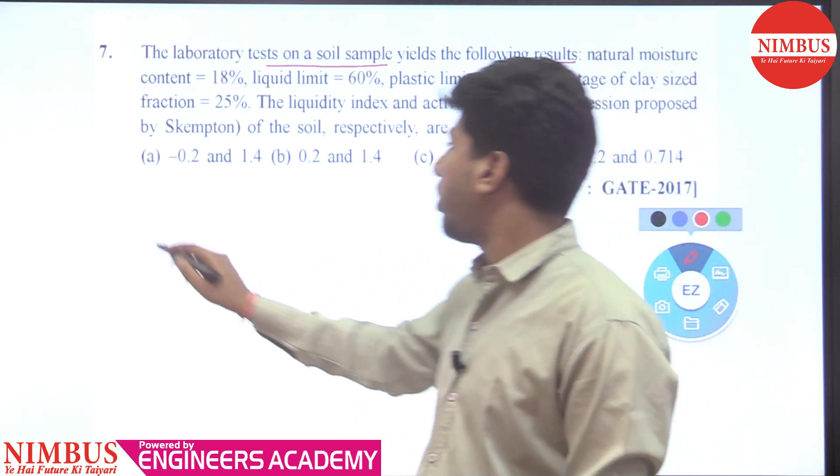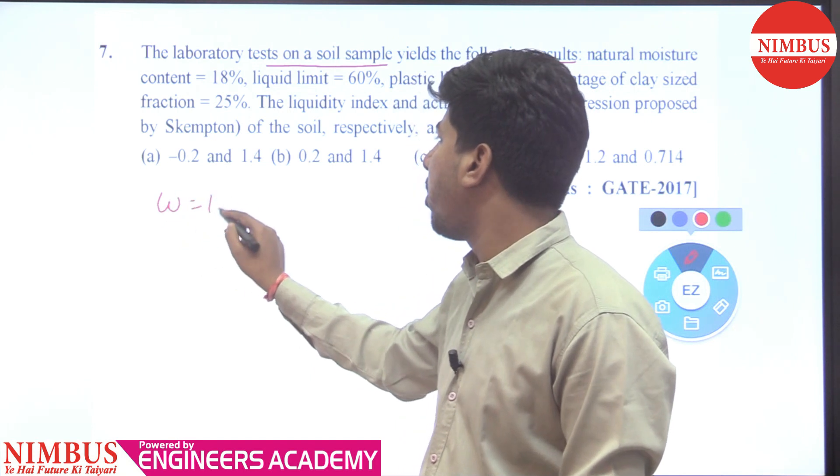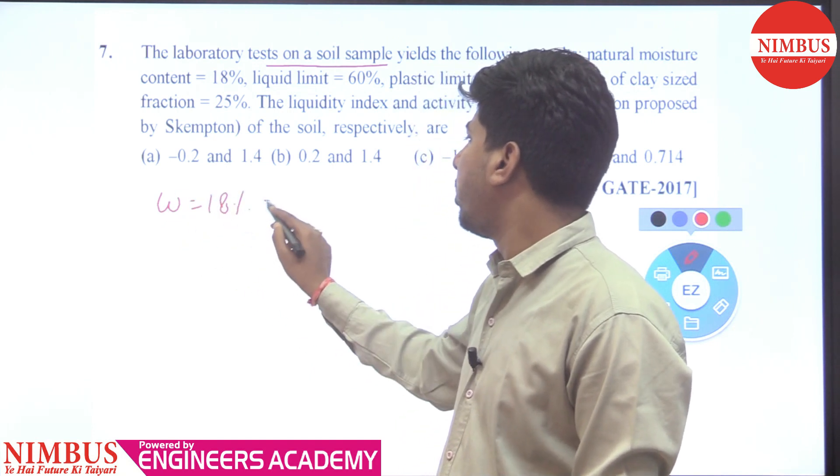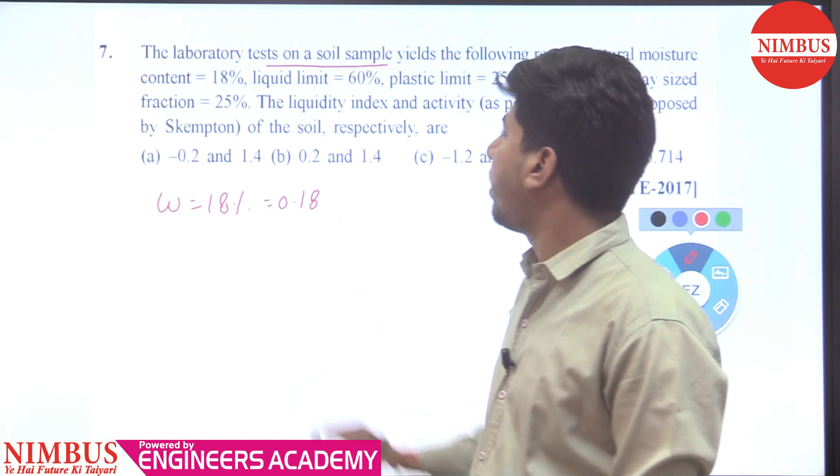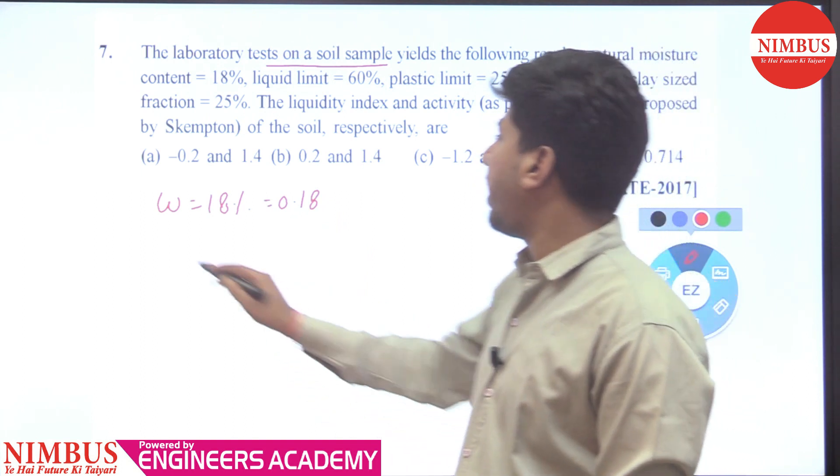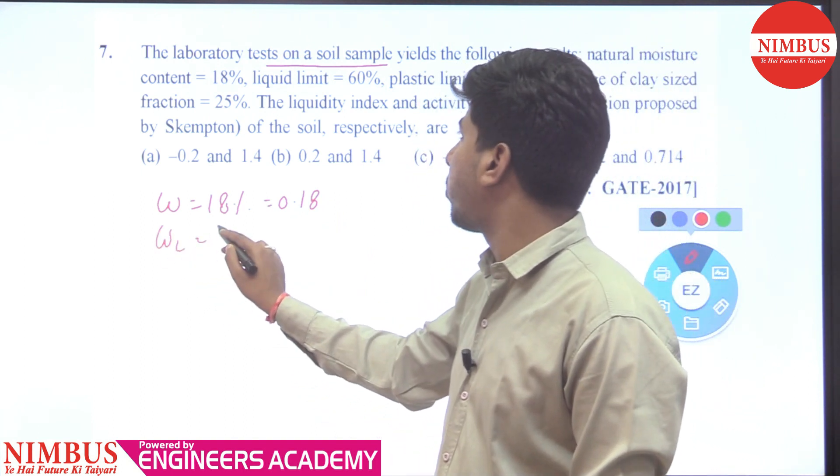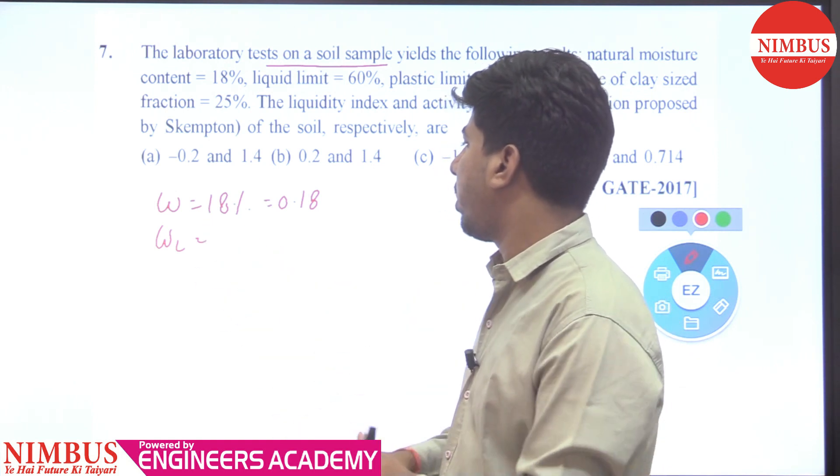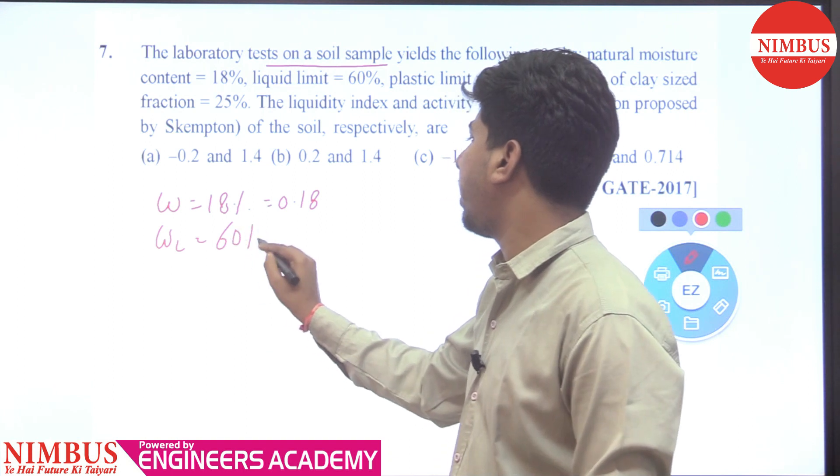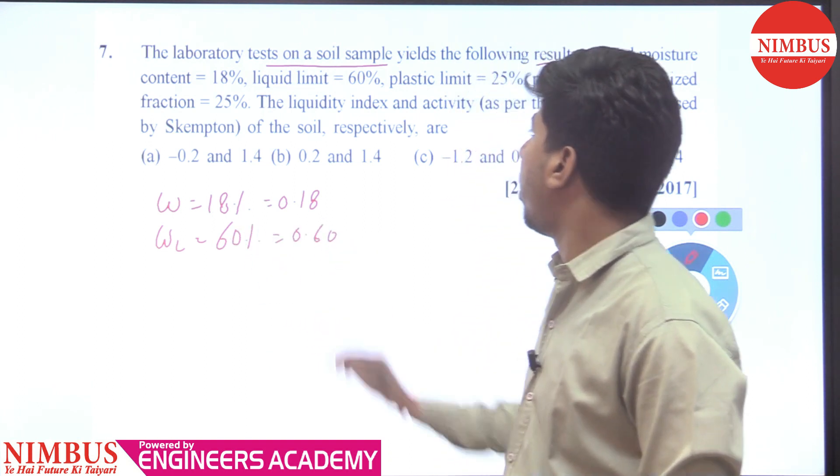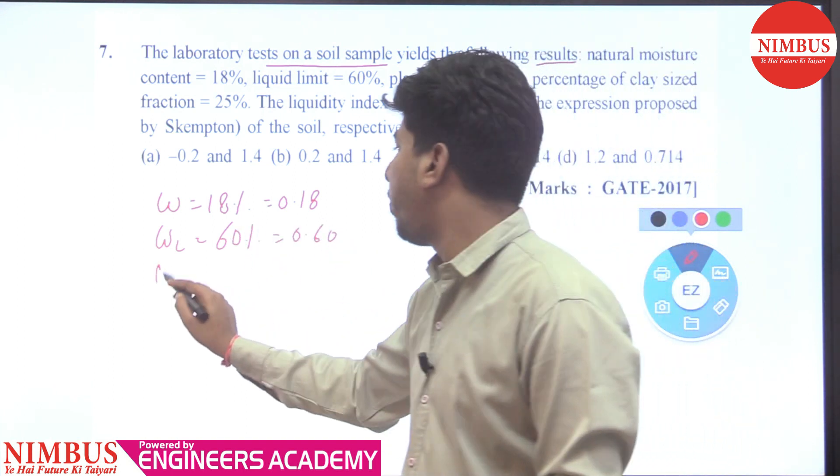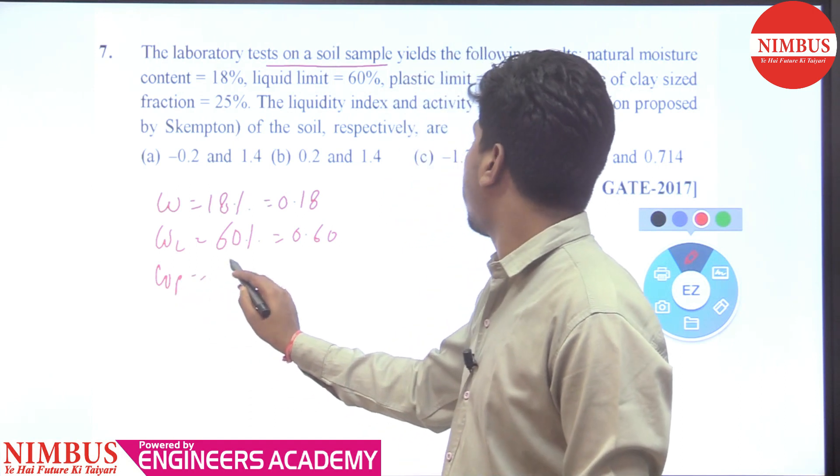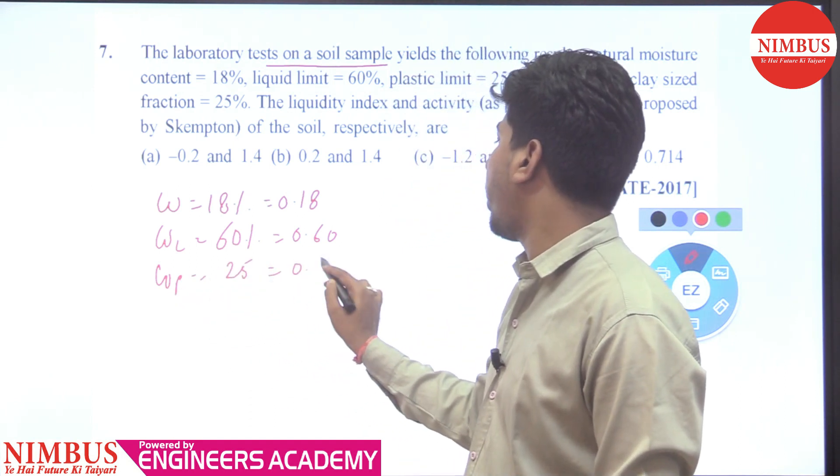Calculate the natural moisture content: water content 18% or 0.18. Liquid limit WL equals 60%, 60% or 0.60. Plastic limit WP equals 25% or 0.25.